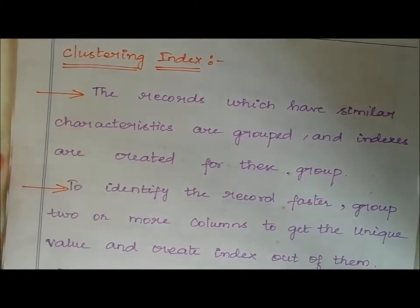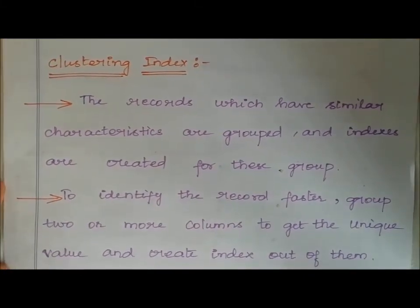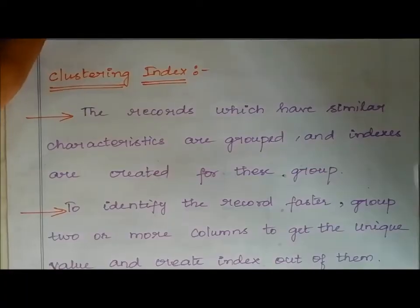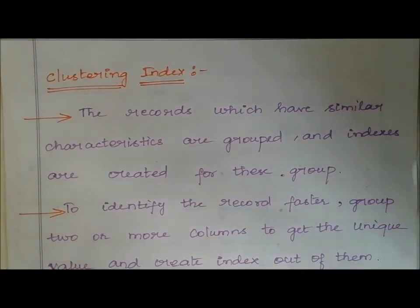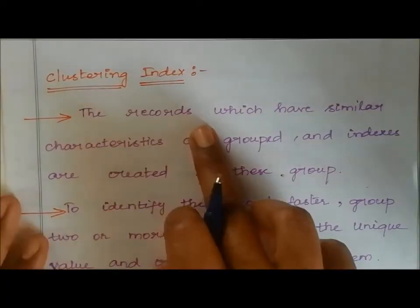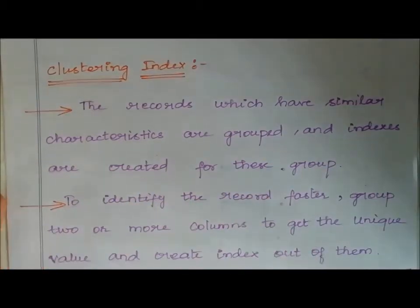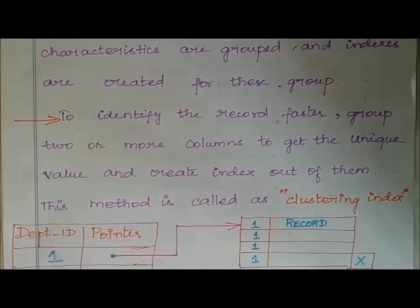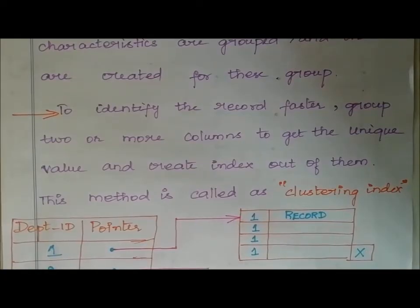The next indexing type is clustering index. The records which have similar characteristics are grouped together, and indexes are created for this group. Similar group of records are grouped together and the index is created for that particular group. To identify the record faster, two or more columns are used to get the unique value and create an index — this method is called clustering index.